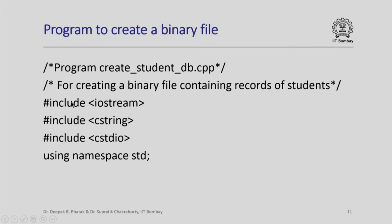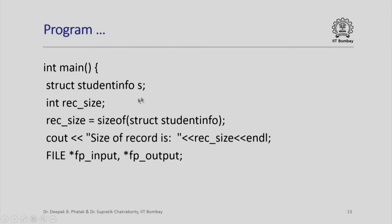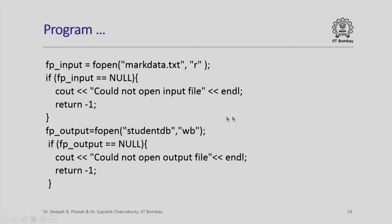Let us look at the program itself. After the include statements, we have the structure definition struct student_info, which defines a new abstract data type. In the main program, we define a variable s of type struct student_info, and compute rec_size using sizeof, printing it for our own information. We then define two file pointers, fpinput and fpoutput. We open fpinput associated with markdata.txt in read mode, and if the file pointer is null, we give an error message and return.